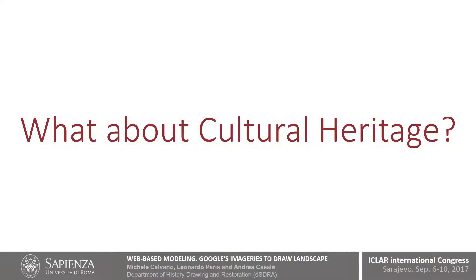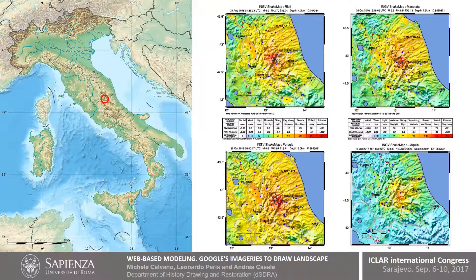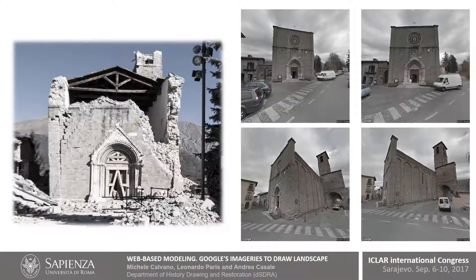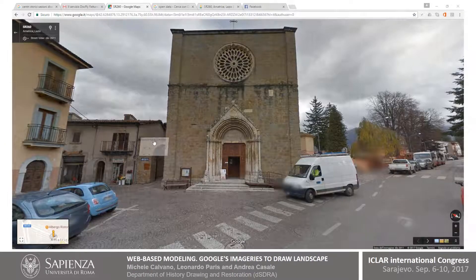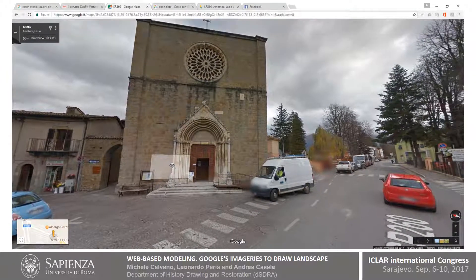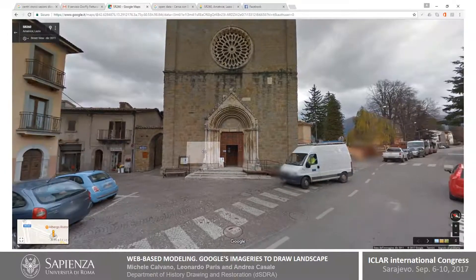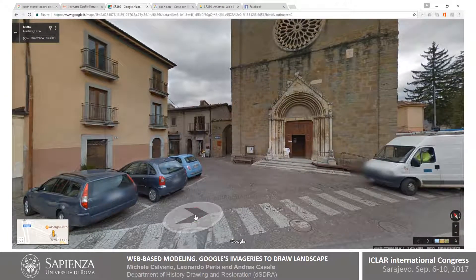We can also apply our method to cultural heritage. Since August 2016, the center of Italy has been hit by a series of seismic events that have completely destroyed some cities along the Tronto Valley, such as Amatrice and Accumuli. Now there are two realities: a physical reality and a web reality. To the left, we see the church of Sant'Agostino of Amatrice after the first shock. To the right, a sequence of images shows the church today in Street View. Unfortunately, we don't have a prior survey to rebuild the destroyed church, but by applying our method, we can get metric information from the Street View panoramas.